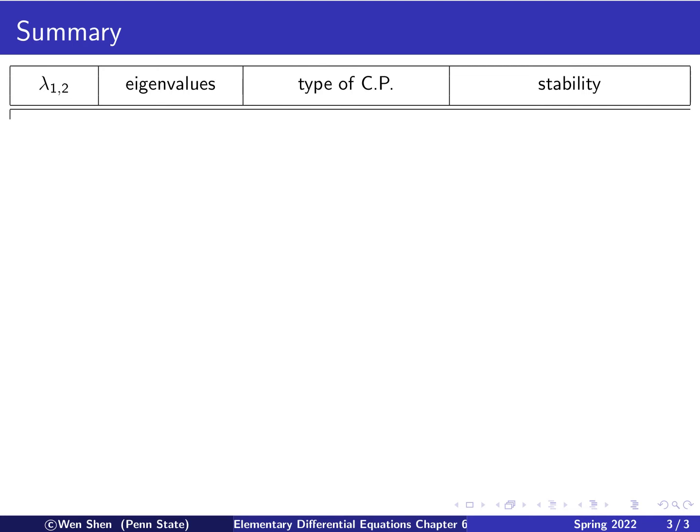So let's look at this big table here. We'll have four columns in the table. The first column is the eigenvalues λ₁, λ₂, and in particular, the type of it, real or complex. The second column is the properties of them. Then the third will be the type of the critical point, and the last one will be the stability.